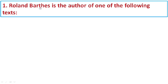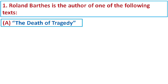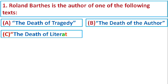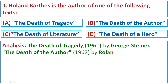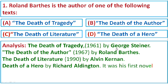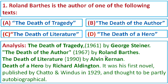Question number one: Roland Barthes is the author of one of the following texts. Option A: The Death of Tragedy. Option B: The Death of the Author. Option C: The Death of Literature. Option D: The Death of a Hero. The Death of Tragedy is a 1961 work by George Steiner. The Death of the Author is a 1967 essay by Roland Barthes. The Death of Literature is a 1990 book by Alvin Kernan. The Death of a Hero is a WWI novel by Richard Aldington, published in 1929. The correct option is B: The Death of the Author.